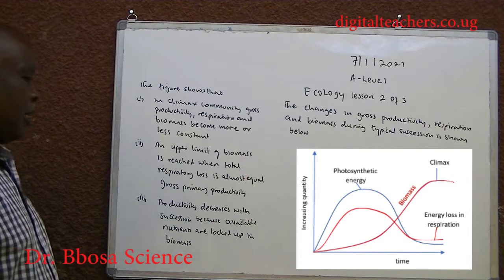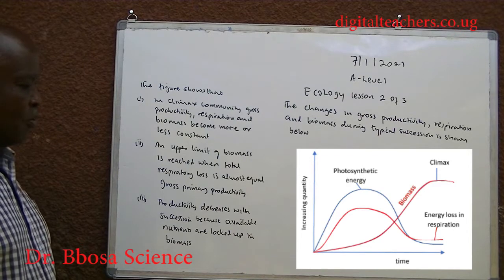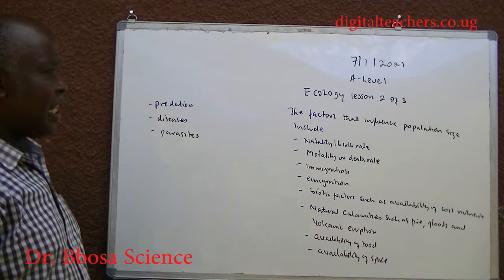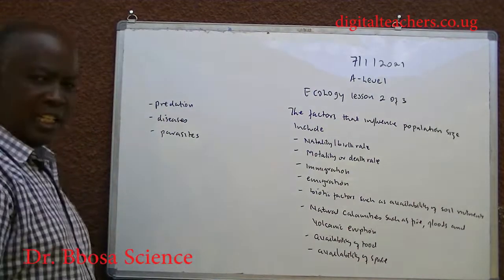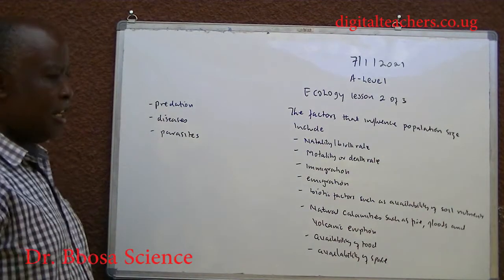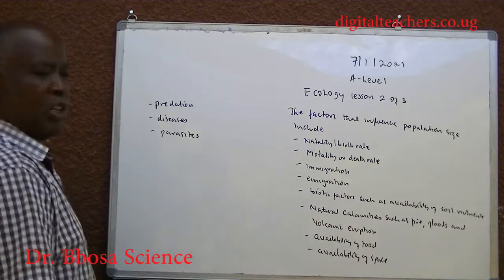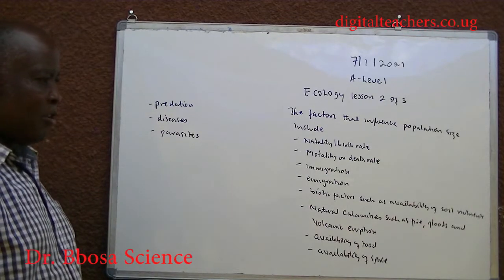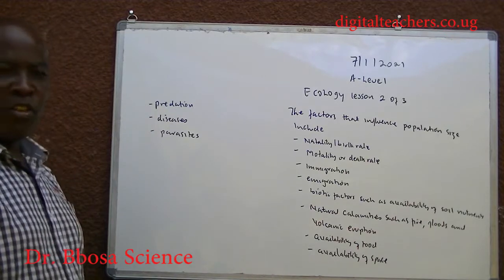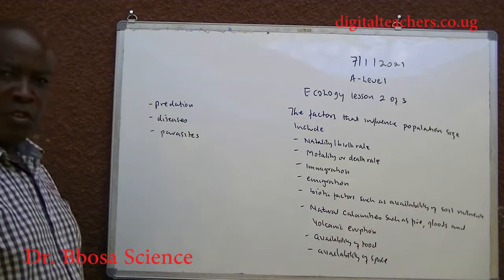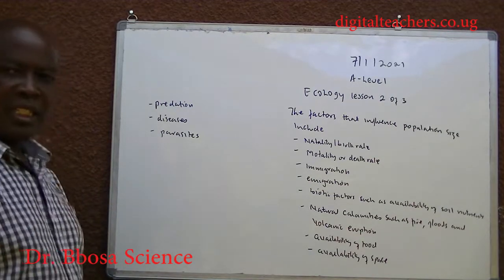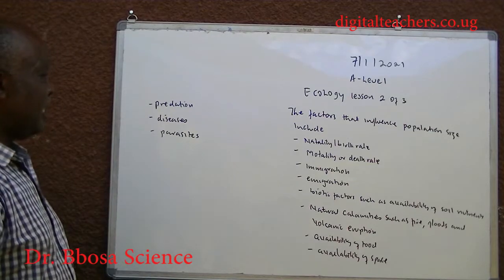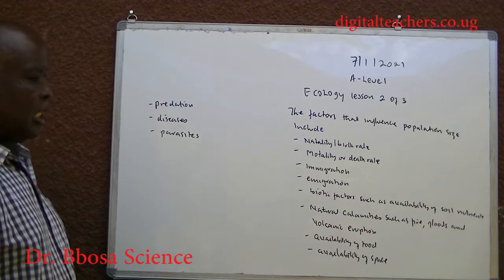Net productivity decreases with succession because available nutrients are locked up in biomass. In general, factors that influence population size include: birth increases population; mortality reduces population; immigration increases the population; emigration decreases the population; diseases and parasites reduce the population.